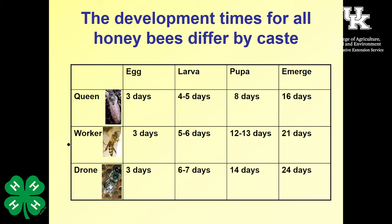The queen's process is much quicker because she receives royal jelly her whole life cycle. That high concentration of nutrients causes her to grow rapidly, which is important because if the hive doesn't have a queen, they have to produce one very quickly.